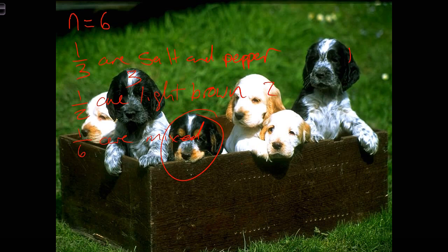Just because half of these puppies are light brown, does that give us strong evidence to estimate that half of all the puppies in the world are brown? Or that one third of all the puppies in the world are salt and pepper? Think about why we can't use this sample as a good foundation to make inferences about the population of all puppies of this breed.